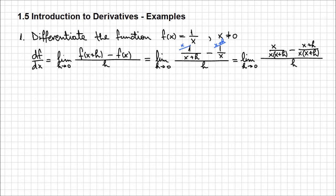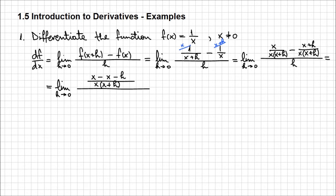As you can see we already have the common denominator, and everything is over h. Now I can perform the subtraction in the numerator: the limit when h approaches 0, with numerator x minus x minus h — because that minus was in front of the fraction — over the common denominator x times (x plus h), and everything over h.